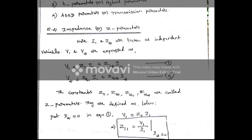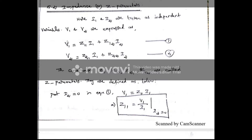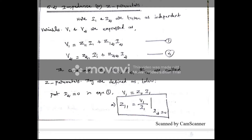The first parameter is the impedance parameter or Z parameter. In this parameter, input current I1 and output current I2 are the independent variables, and voltages V1 and V2 are dependent. The Z parameter equations are: V1 = Z11·I1 + Z12·I2, and V2 = Z21·I1 + Z22·I2. These two equations are called the Z parameter equations.